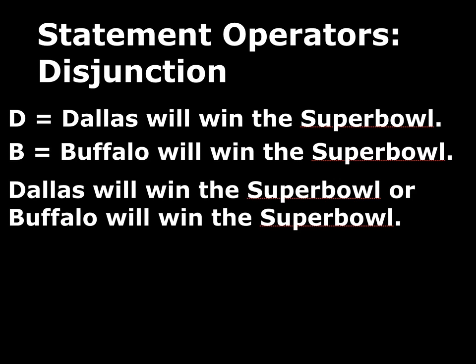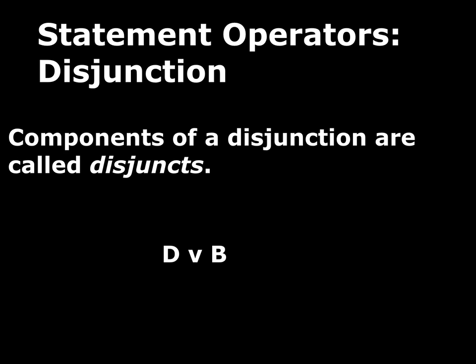For this disjunction, we can find the two atomic statements: 'Dallas will win the Super Bowl,' call that D, and 'Buffalo will win the Super Bowl,' call that B. If we rewrite the original statement, we get D wedge B — we use this wedge as a symbol for disjunction. Just as with conjunction, it's useful to have a name for the components of a disjunction. We call them disjuncts. So in the disjunction D or B, D is the first disjunct and B is the second disjunct.